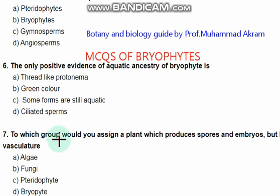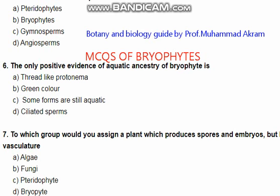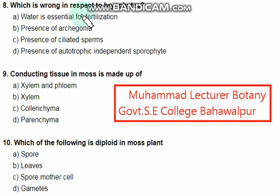To which group would you assign a plant which produces spores and embryos but lacks seeds and vascular tissues? The right option is bryophytes.